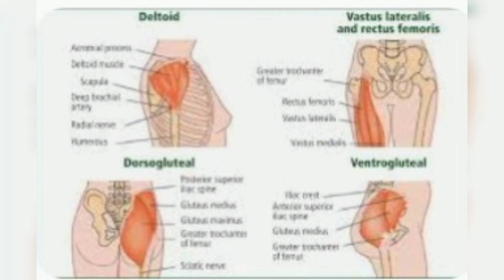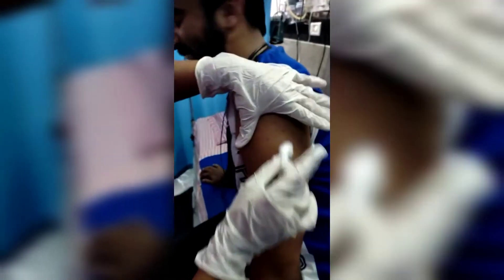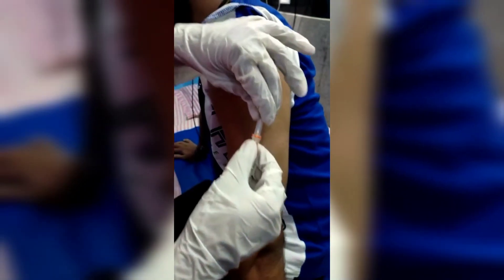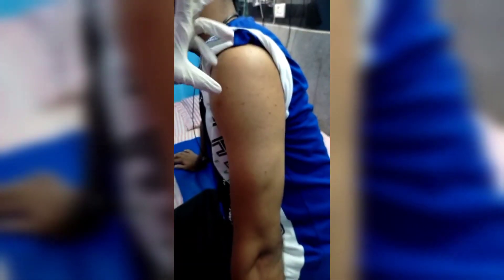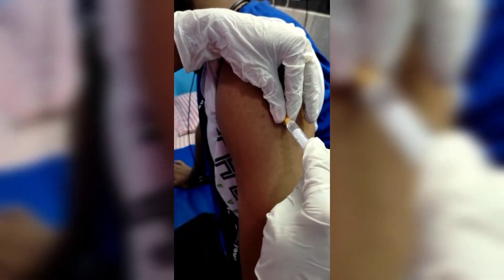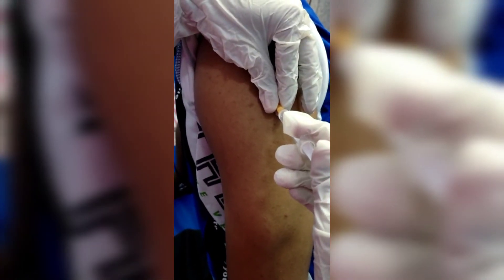This IM injection will be given at a 90 degree angle. Before giving an injection, wash the hands, prepare the injection, disinfect the injection site with an alcohol swab, and inject the medication in a proper manner. After inserting the needle, aspirate to check for any blood return, and finally inject the medication into the muscle.